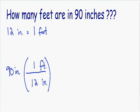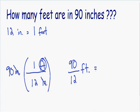Now notice how the inches cancel out and we are left with a unit of feet. We have 90 times 1 in the numerator, which is just 90, and in the denominator we have 12. Our units are feet. And if you want to put this in decimal form, 90 over 12 is equal to 7.5. So how many feet are in 90 inches? We have 7.5 feet in 90 inches.